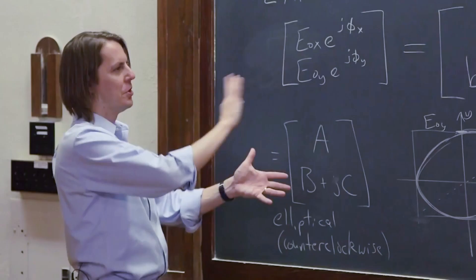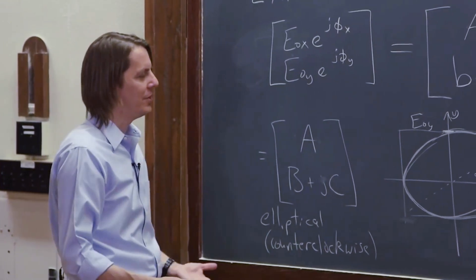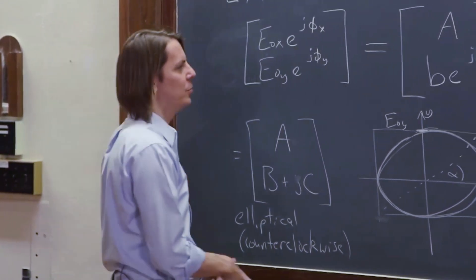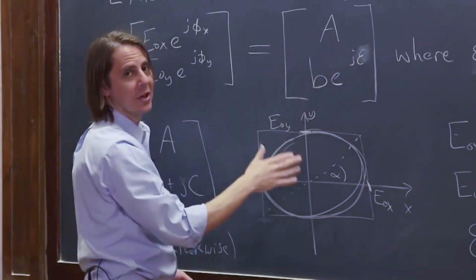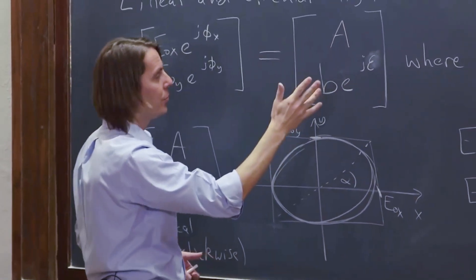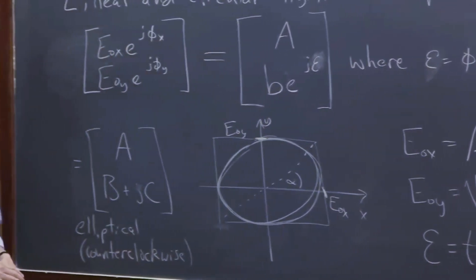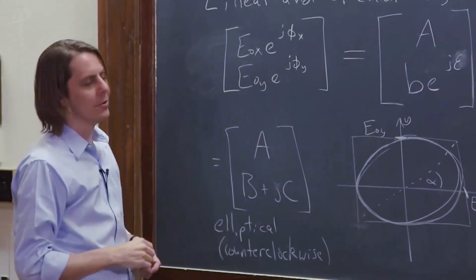So that is the most general description of light. This is the most general polarized state. Linear light is a special case where this is all zero and it's just A or this is zero and this is all real. Circular light is a special case where this is pi over 2 which makes everything come out simpler. But the general case is some elliptical shape at some angle.